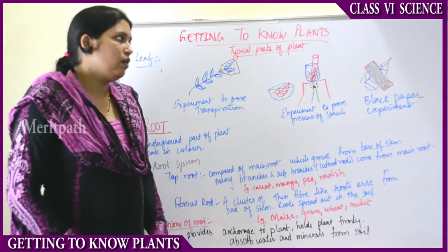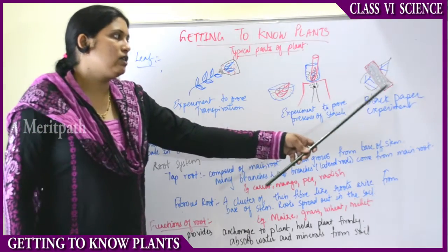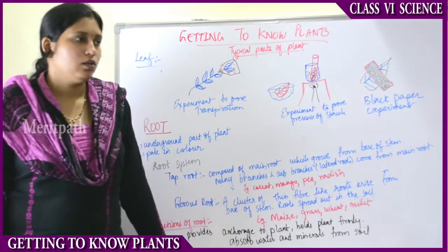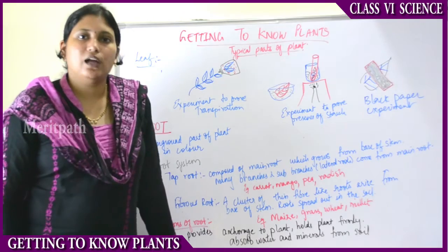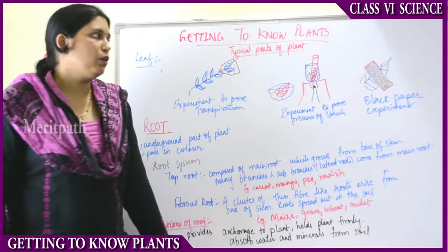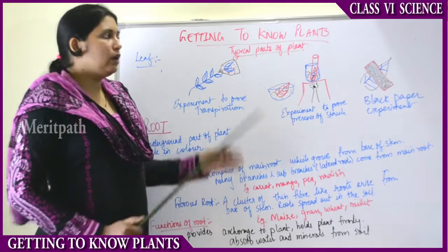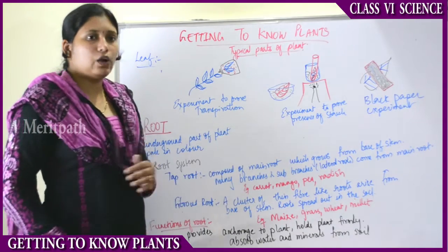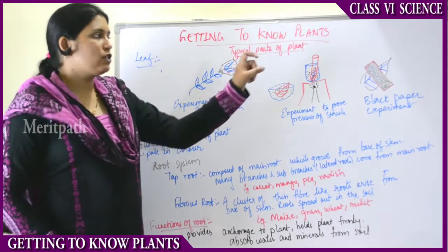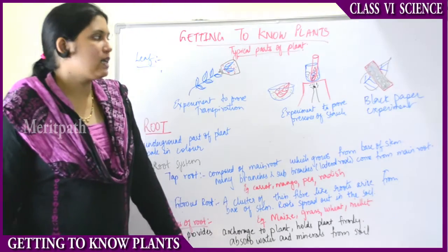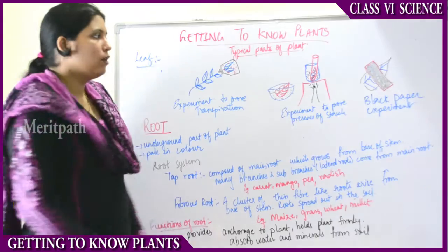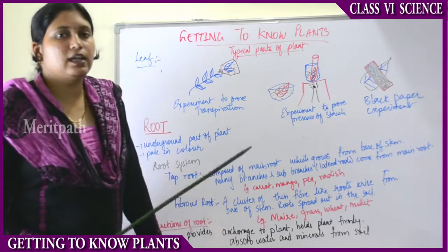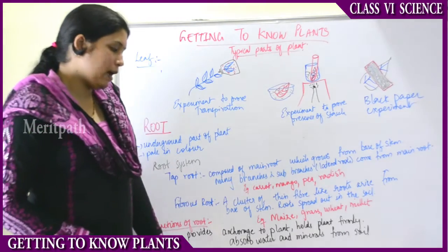There is one more experiment — the black paper experiment — to prove photosynthetic activity. Take a potted plant, select one leaf, and attach a thin strip of black colored polythene paper to the middle part of that leaf. Put it in the sunlight for some time, then take it out and test for the presence of starch with iodine.